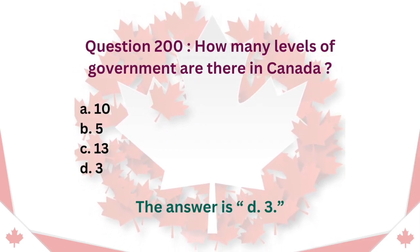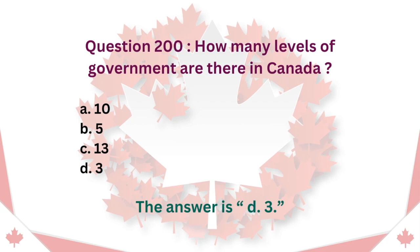Question 200: How many levels of government are there in Canada? A. 10. B. 5. C. 13. D. 3. The answer is D. 3.